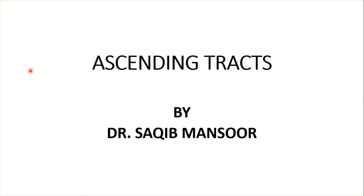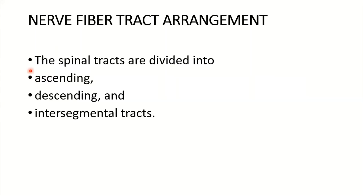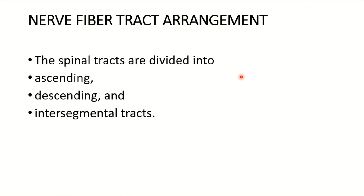Today we are focusing on the ascending tracts of the spinal cord. First of all, we should know what is the nerve fiber tract arrangement. The spinal cord tracts are divided into ascending tracts, descending tracts, and intersegmental tracts. The ascending tracts go from the spinal cord upward to the higher centers and convey sensory sensations.